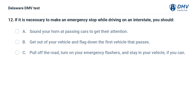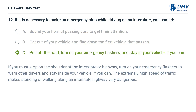If it is necessary to make an emergency stop while driving on an interstate, you should: A. Sound your horn at passing cars to get their attention. B. Get out of your vehicle and flag down the first vehicle that passes. C. Pull off the road, turn on your emergency flashers, and stay in your vehicle if you can. Answer: C. If you must stop on the shoulder of the interstate or highway, turn on your emergency flashers to warn other drivers and stay inside your vehicle if you can. The extremely high speed of traffic makes standing or walking along an interstate highway very dangerous.